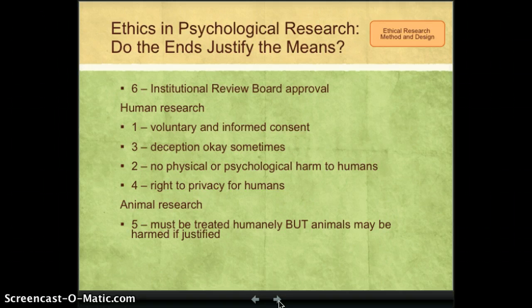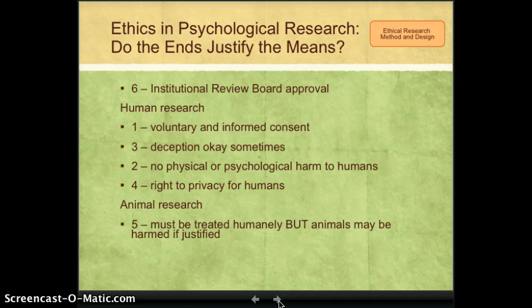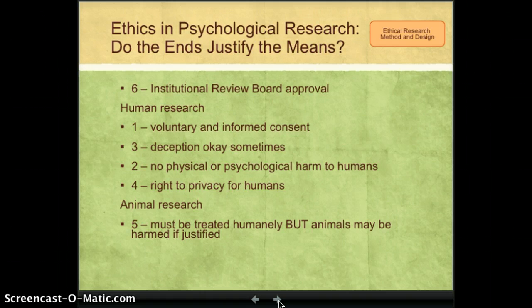Guideline two states that in research, no physical or psychological harm can come to humans. The word harm here is very important — in this context, harm means permanent damage. So researchers can inflict discomfort or a temporary hurt, but they are not allowed to harm participants in a way that would be permanent.